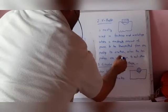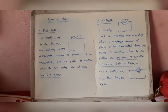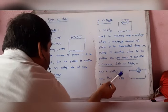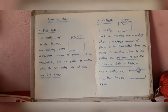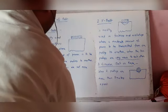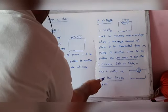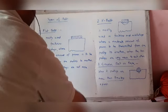The third type is the circular or rope belt, mostly used in factories and workshops where a moderate amount of power is to be transmitted from one pulley to another when the two pulleys are more than 8 meters apart. So: flat belt is for less than 8 meters, rope/circular belt is for more than 8 meters, and V-belt is for when pulleys are very close to each other.